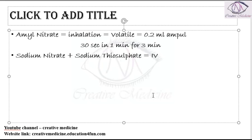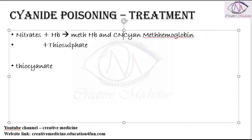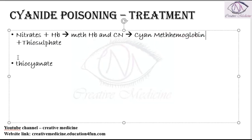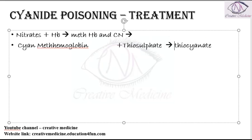When nitrates combine with hemoglobin, they form methemoglobin and cyanide. This methemoglobin and cyanide combine together to form cyan methemoglobin. This cyan methemoglobin then combines with thiosulphates to form thiocyanates, which are excreted in the urine.